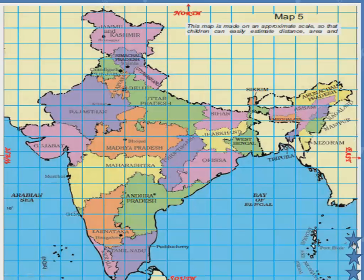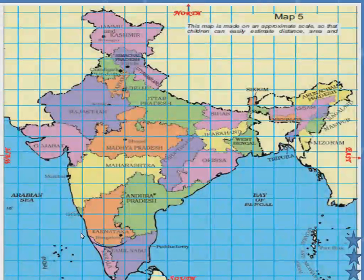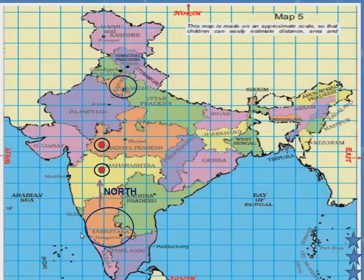Now let us see the questions. The Karnataka team starts from Bangalore and moves in the north direction — which states does it cross to reach Delhi? The Karnataka team is in Bangalore, moving north to reach Delhi, where the Red Fort and Rashtrapati Bhavan are located. The states it crosses are Maharashtra, Madhya Pradesh, and Rajasthan.